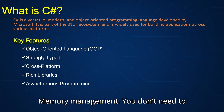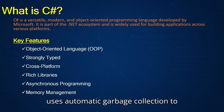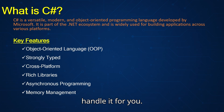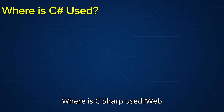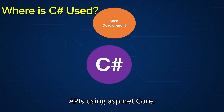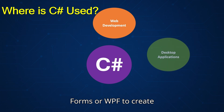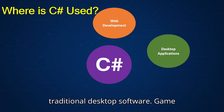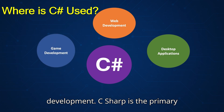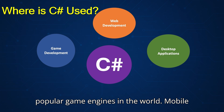Memory management: you don't need to worry about cleaning up memory — C-sharp uses automatic garbage collection to handle it for you. Where is C-sharp used? Web development: build scalable websites and APIs using ASP.NET Core. Desktop applications: use Windows Forms or WPF to create traditional desktop software. Game development: C-sharp is the primary language used in Unity, one of the most popular game engines in the world.